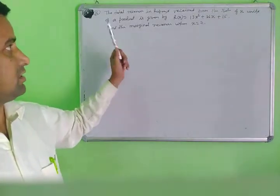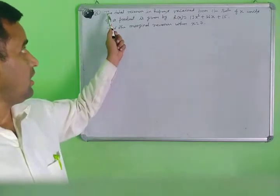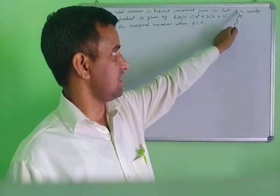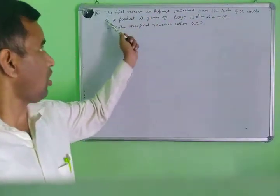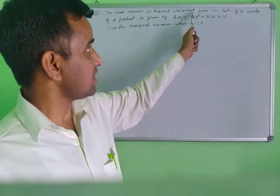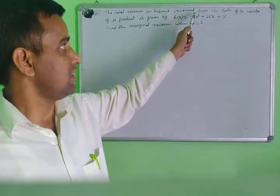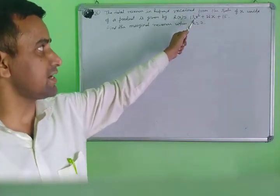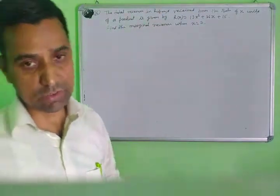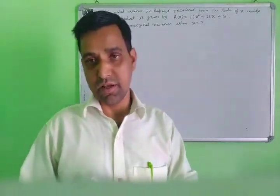Next question — question number 16. This is a different type of question. Read the question: the total revenue in rupees received from the sale of x units of a product is given by R(x) equals 13x squared plus 26x plus 15. Find the marginal revenue when x equals 7. First understand the question — this is a different type.